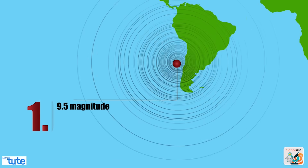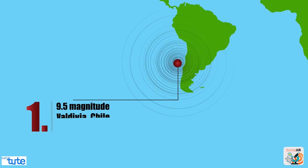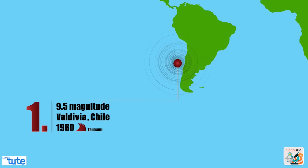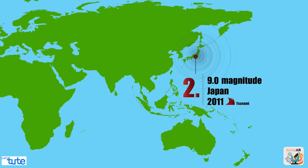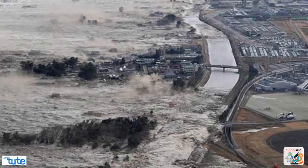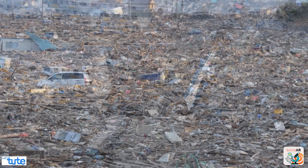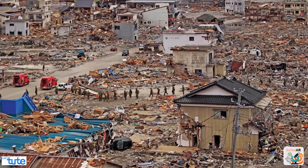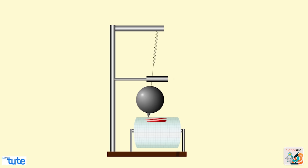The most horrifying earthquake recorded to date was of magnitude 9.5 out of 10, which happened in Valdivia in southern Chile in 1960. Another one that happened in Japan in the Tohoku region was of magnitude 9.0, on March 11th, 2011. This earthquake caused massive and enormous damage and destruction, taking nearly 16,000 people's lives.